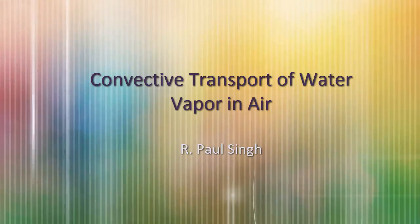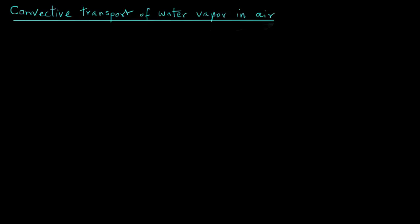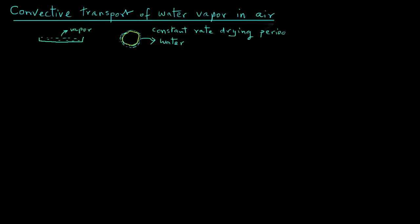Let's apply some of the mass transfer principles in determining the convective transport of water vapor in air. We can have a situation of water in a tray with water vapor moving into the air. We can also consider a food material with high moisture content that has a layer of water on its surface — a case of what we call a constant rate drying period, where plenty of water replenishes any that evaporates, so there is always a layer of water present on the food surface.